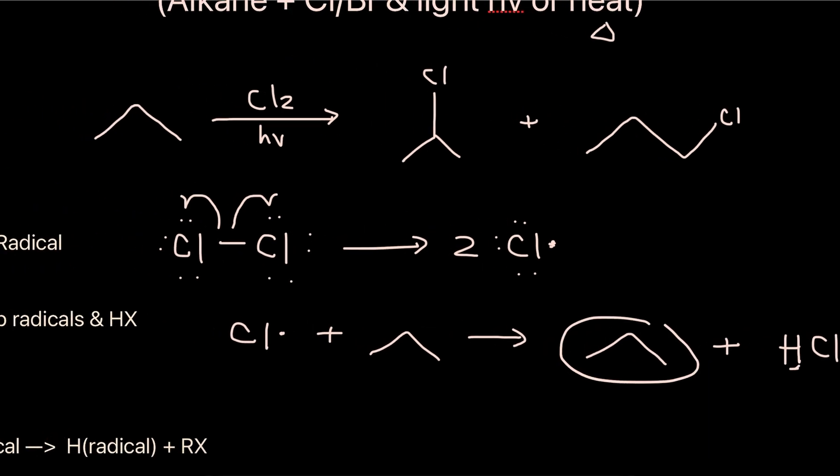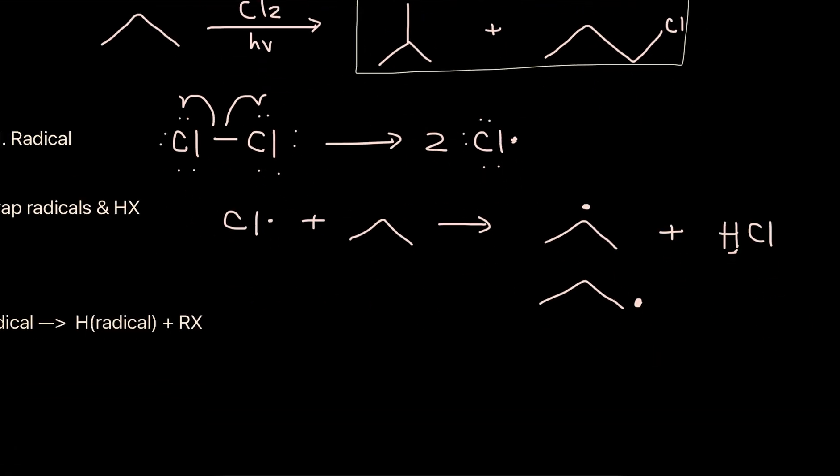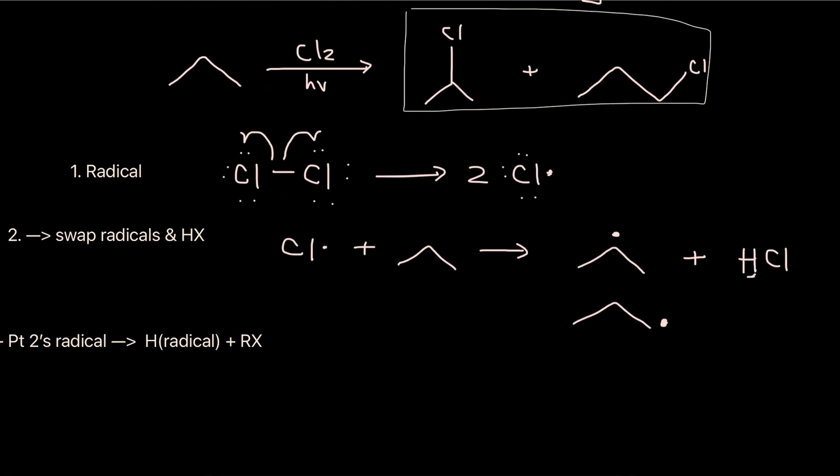Now, where should we place the electron? Well, because we ended up forming two different products, that means our radical must have either formed on here or on here. So we will write two options here, because the question given to us has chlorine on both positions.